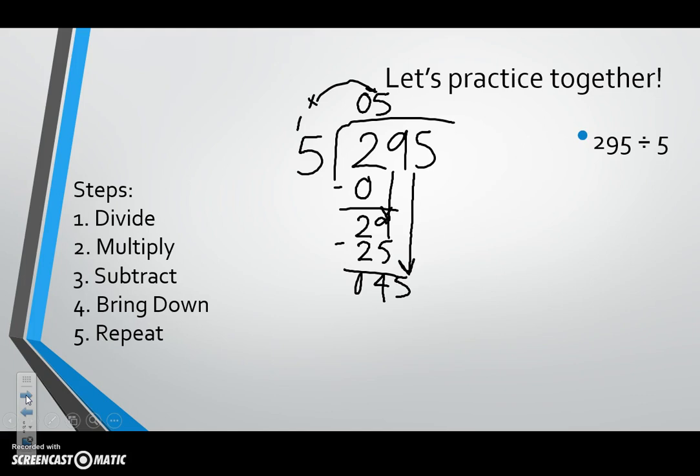We know that basic fact that five can go into 45 nine times. We need to make sure though. So we're going to multiply five times nine, which is 45. We subtract, we get zero. We have nothing left to bring down, so we know that we have a quotient of 59.